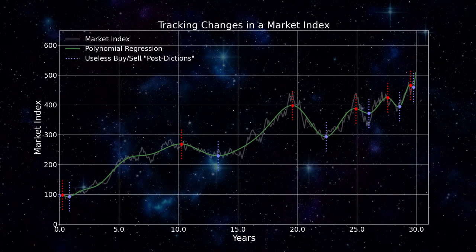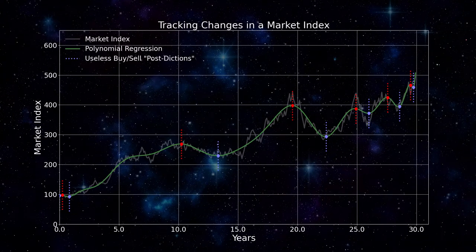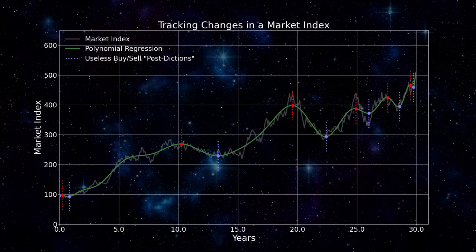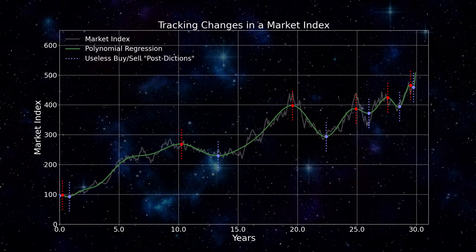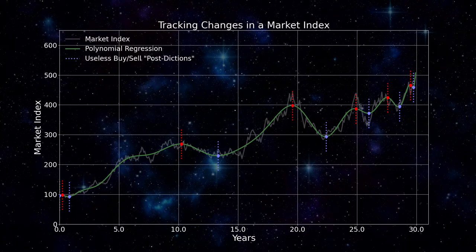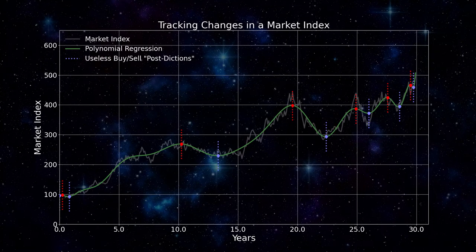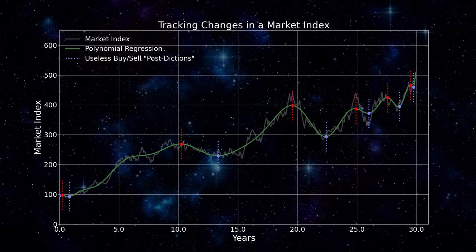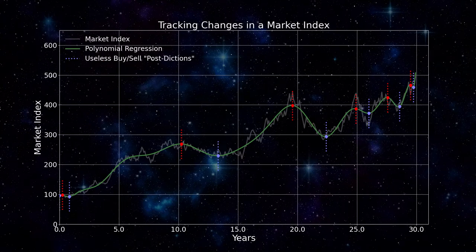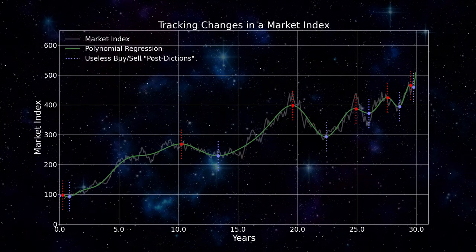On the dates marked in red, I would sell. On the dates marked in blue, I would buy. Simple, huh? But there's one problem: you can only identify market reversals after the fact. And for big reversals like the one at about 19 years on this chart, some time must pass before you know how big the reversal is going to be. And by then it's too late to act on it. That's why I call them post-dictions — because they can only be detected after the fact.